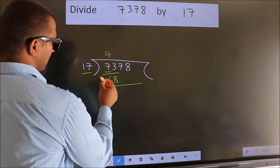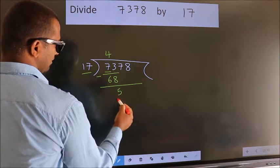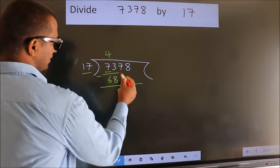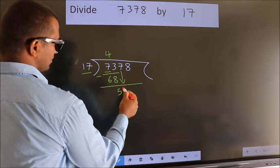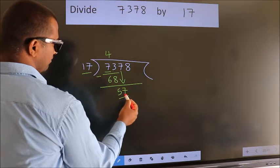Now we should subtract. We get 5. After this, bring down the next number. So 7 down. So 57.